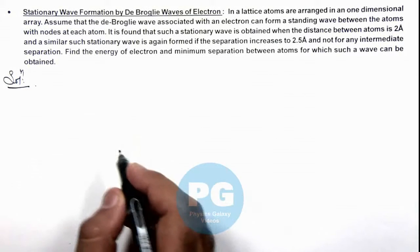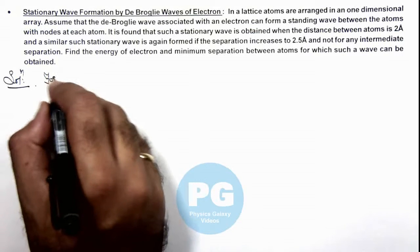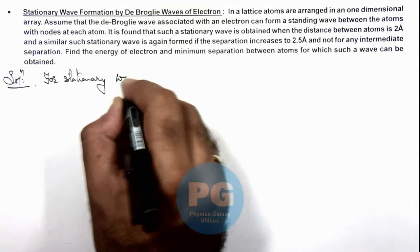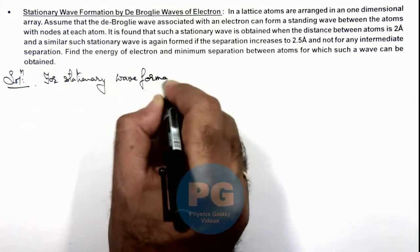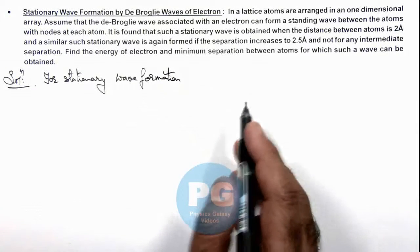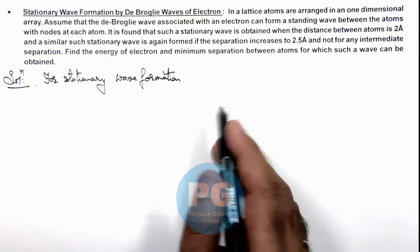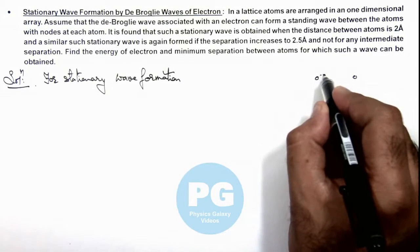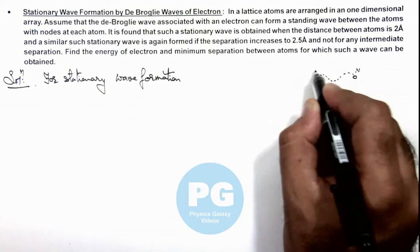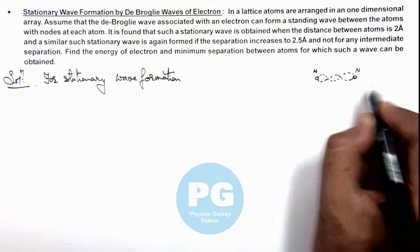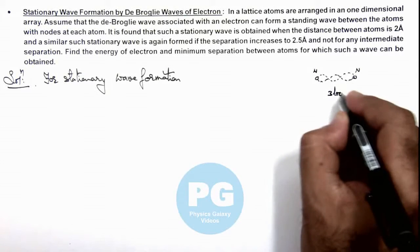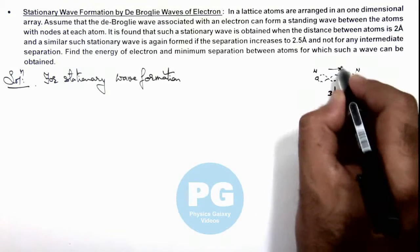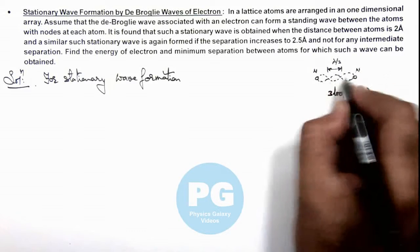Here in this situation, we can see that for stationary wave formation, the distance between the atomic sites must be a multiple of λ/2, because if these are the two neighboring atoms and a stationary wave is produced with nodes at each of these atoms, say for example 3 loops are being formed. I am just taking an example where these are 3 loops, with each loop having a length λ/2.